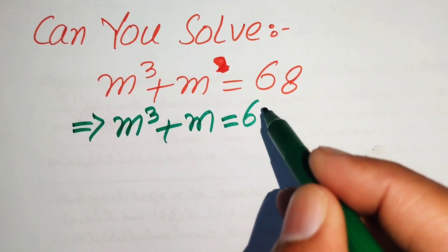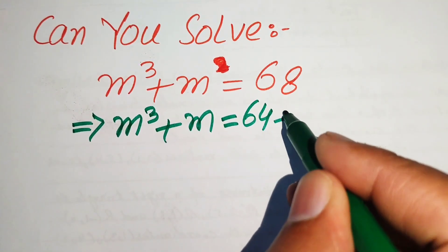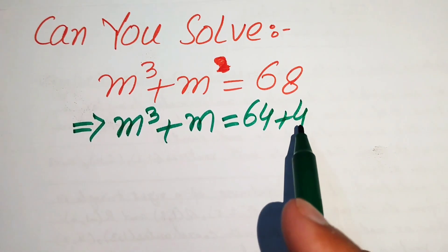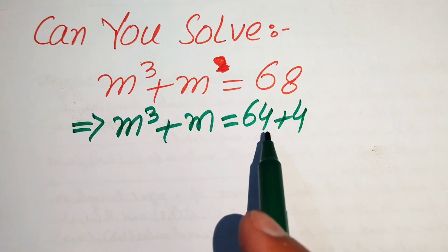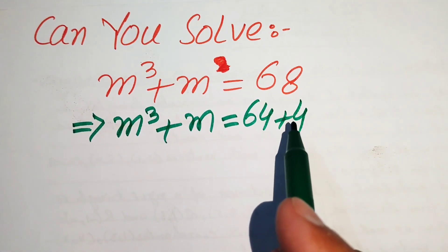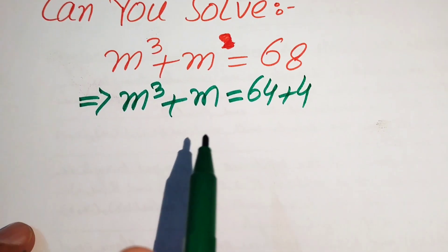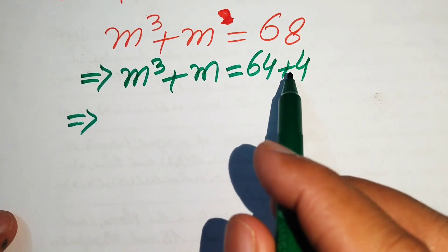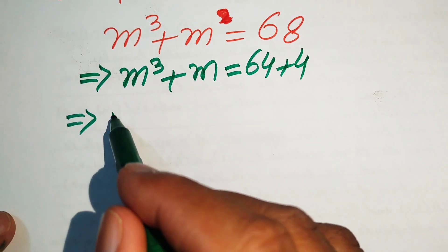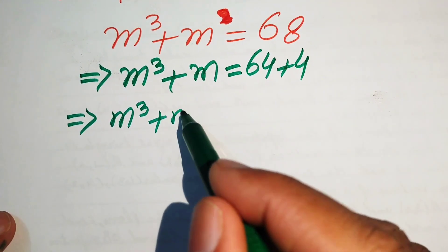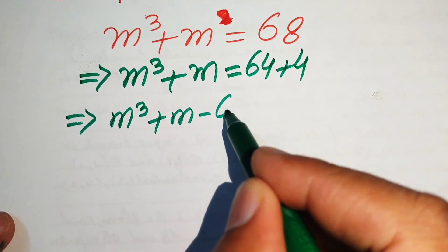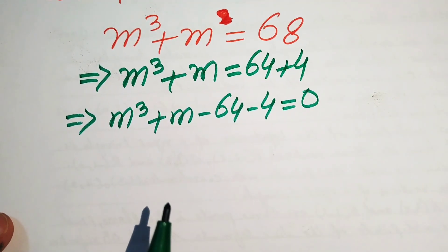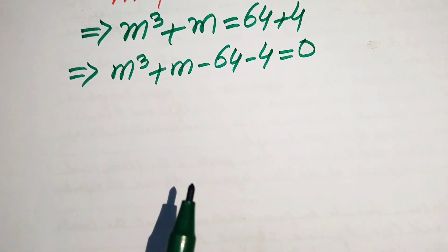We rewrite 68 as 64 + 4, since 64 + 4 = 68. After that, we move both of these terms to the left-hand side. When we move them over, the signs become negative, giving us m³ + m - 64 - 4 = 0.